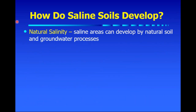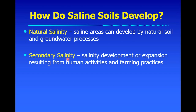How do saline soils actually develop? In Western Canada, the last glaciation receded 10 to 12,000 years ago. Over that time, we've had natural salinity form just through natural soil and groundwater processes. But from about 100 to 150 years ago, when our agricultural lands were developed, we started to see secondary salinity form — soil salinity development or expansion as a result of human activities and farming practices. Farming practices have played a huge role, but even things like road construction have contributed to additional salinity problems.